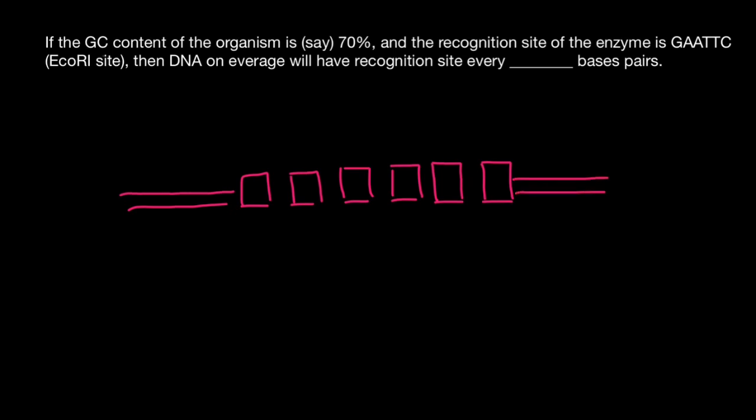First of all, let's find out if this recognition site is palindromic or not. Palindromic means we can read the same sequence in both directions. But unlike the palindromic sentences you may be familiar with, in genetics we use the term in a slightly different way.